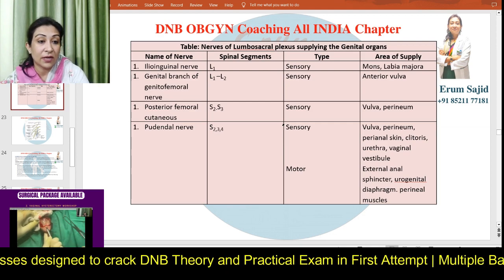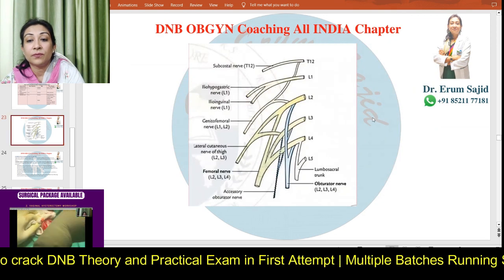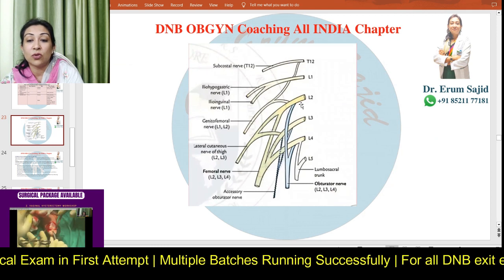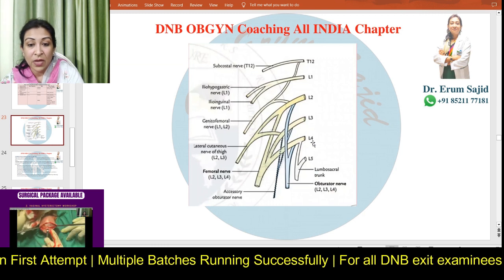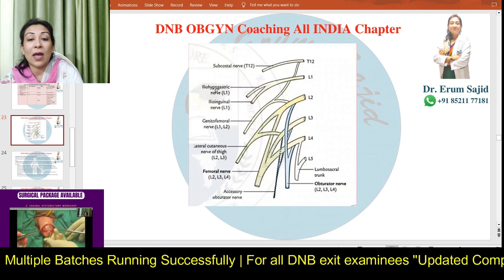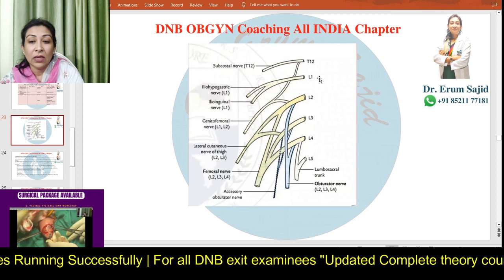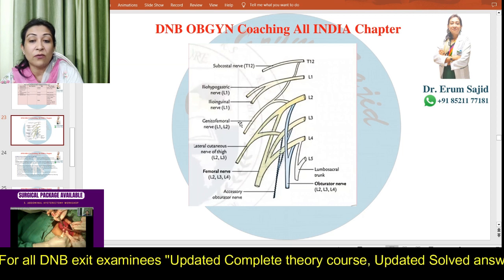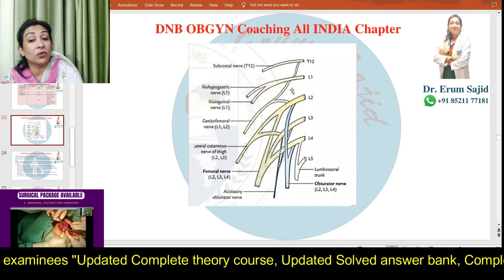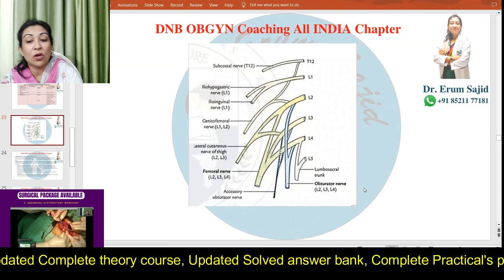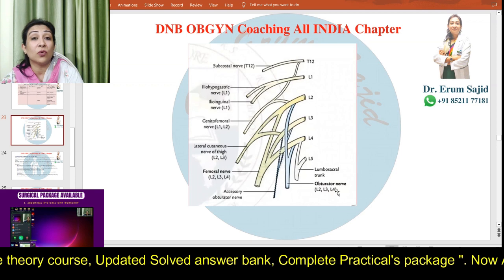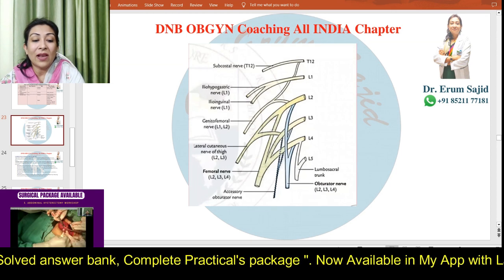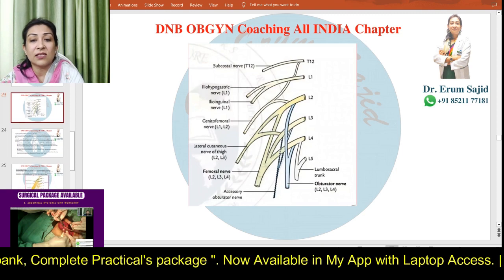Looking at the thoracolumbar plexus diagram: the femoral nerve branches are L2, L3, L4 predominantly. The iliohypogastric nerve is L1, the ilioinguinal nerve is L1, and the subcostal nerve is T12. The genitofemoral nerve comes from both L1 and L2. The obturator nerve is L2, L3, L4 — injury to this nerve, particularly in surgical procedures like Wertheim's hysterectomy, is clinically important.